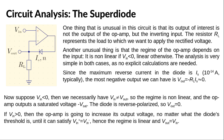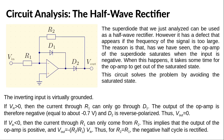Ideally, a super diode would completely block current when reverse-biased. Real diodes actually do this quite well, as their maximum reverse current is of the order of 10⁻¹⁴ amps. We could use this super diode as a half-wave rectifier, but it would work only if the frequency of the input signal is low. The reason is that the op-amp saturates when the input signal is negative, and when the signal becomes positive, it takes some time for the op-amp to exit the saturated state. So, if the frequency is too high, the output signal will be deformed. Instead, we use a circuit that doesn't saturate whether the input signal is positive or negative.